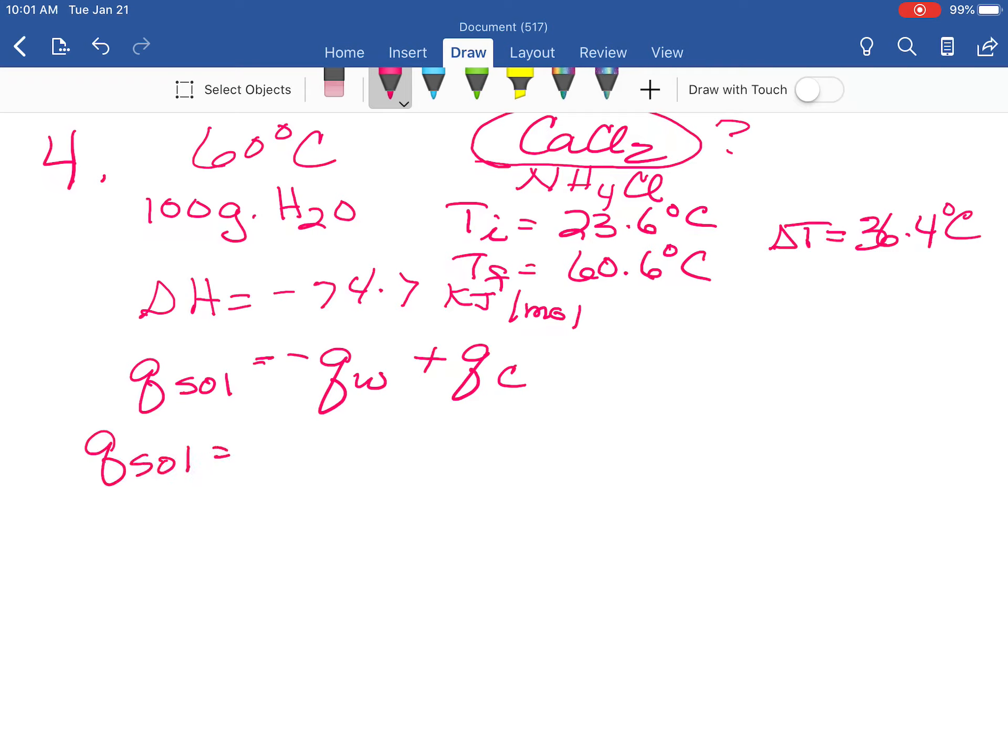And so we can calculate the heat of the solution. Well, it's actually the negative. And so this will be negative times M times the heat capacity times the delta T. And the heat of the calorimeter is going to be the heat capacity, we'll call that big C, the heat capacity of our calorimeter times delta T.